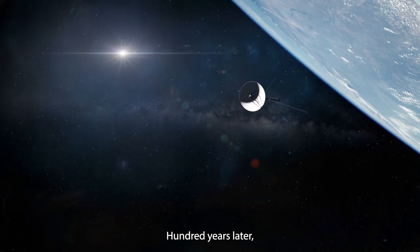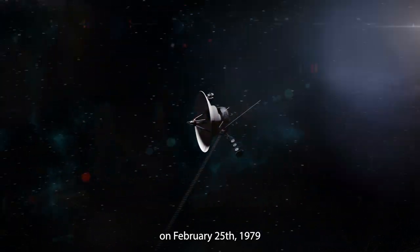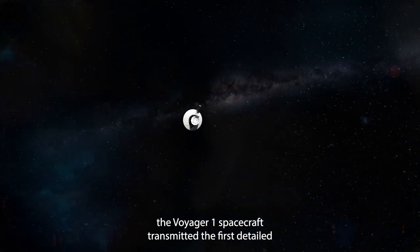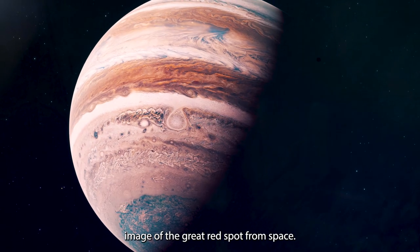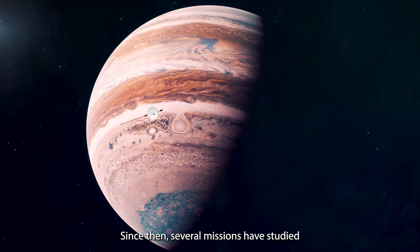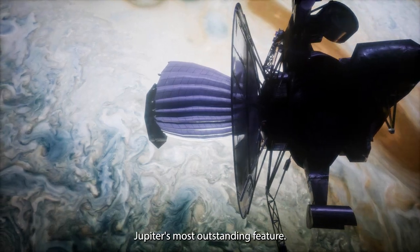One hundred years later, on February 25, 1979, the Voyager 1 spacecraft transmitted the first detailed image of the Great Red Spot from space. Since then, several missions have studied Jupiter's most outstanding feature.